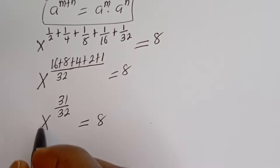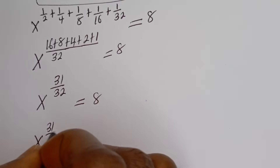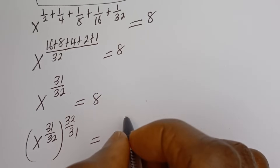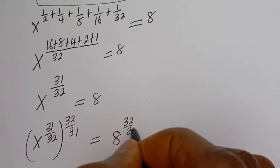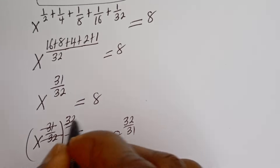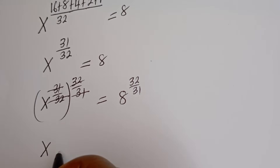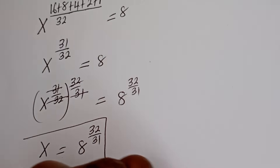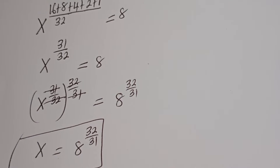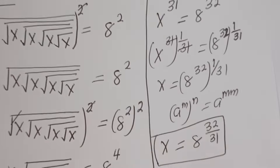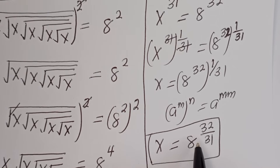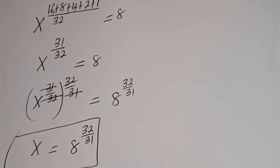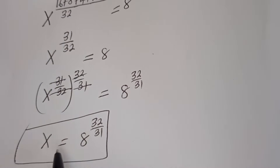Now let's multiply the exponent of both sides by 32 over 31, because we are looking for the value of S. We have S to the power of 31 over 32, to the power of 32 over 31, is equal to H to the power of 32 over 31. This cancels with this, and we get S is equal to H to the power of 32 over 31. This is the final answer. You can see that from Method 1 we also got S is equal to H to the power of 32 over 31, and from Method 2 we have S is equal to H to the power of 32 over 31.